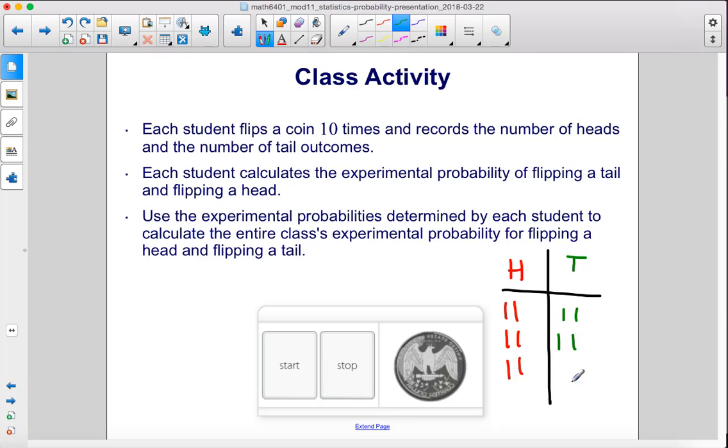Alright, so we got 4 out of 10 as our experimental probability for tails, and we got 6 out of 10 as our experimental probability for heads. As you can see, this was just one experiment. In this one experiment, I got 6 out of 10 as my probability for heads, so if you took this along with 29 other students doing this same experiment, you could then see what the total probability would be for the entire class.